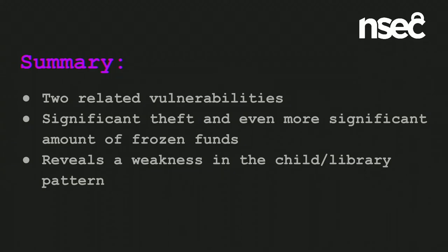To summarize: Parity had two related vulnerabilities — it's possible the second was a result of the haste with which the first was fixed. It was a significant theft and an even more significant amount of frozen funds. It reveals a weakness in the child-library pattern. Some might say this is just the kind of thing someone had to learn the hard way.